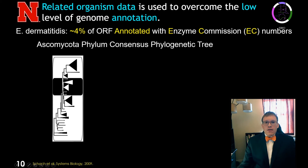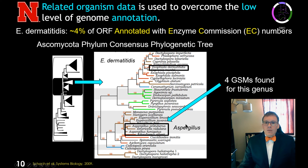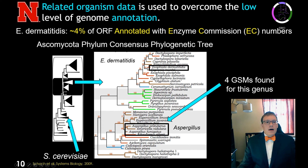This is the Ascomycota phylum consensus phylogenetic tree. Exophiala is located here. We searched the literature for nearby related organisms which might have genome-scale models from which we could draw data. We found four genome-scale models for the related Aspergillus genus, which is not too phylogenetically distant. We did not use Baker's yeast, Saccharomyces, because it is phylogenetically quite distant, so we wanted to keep to more similar organisms.